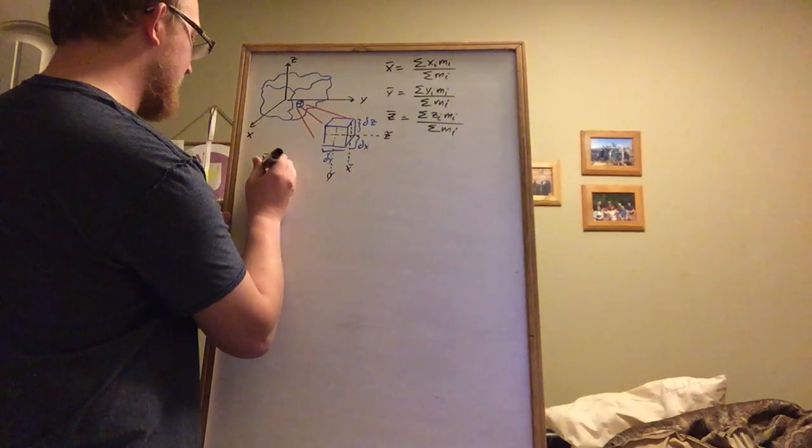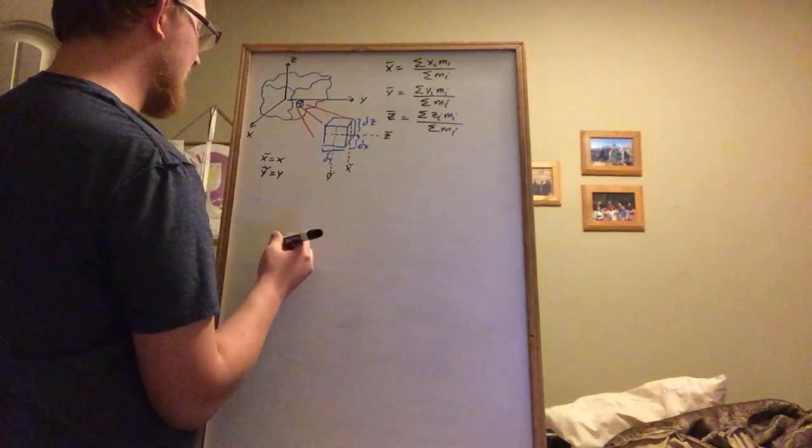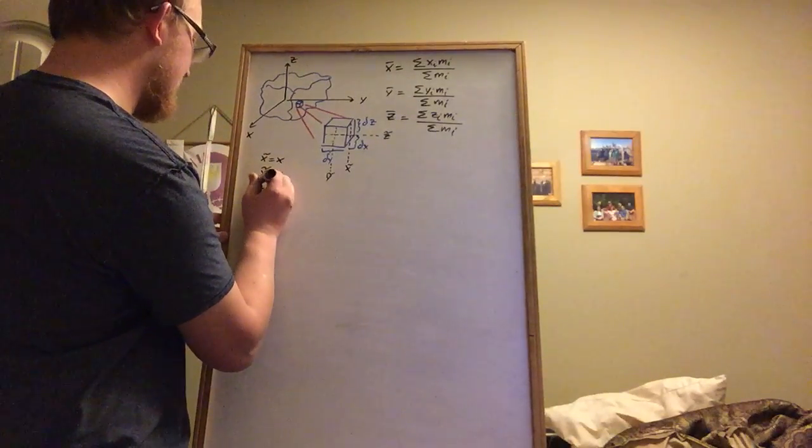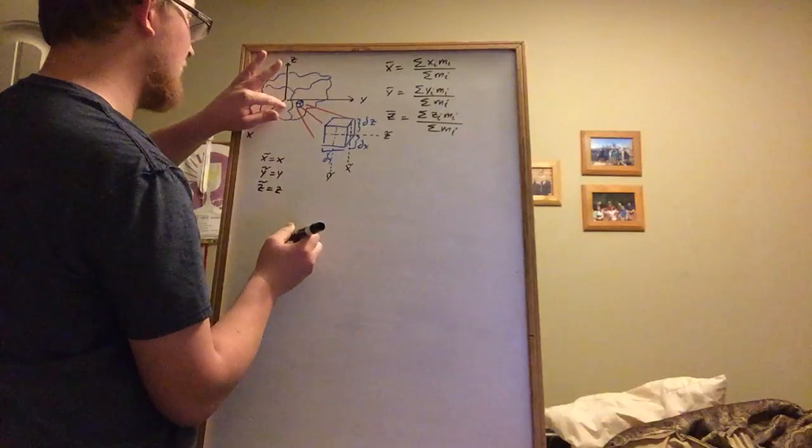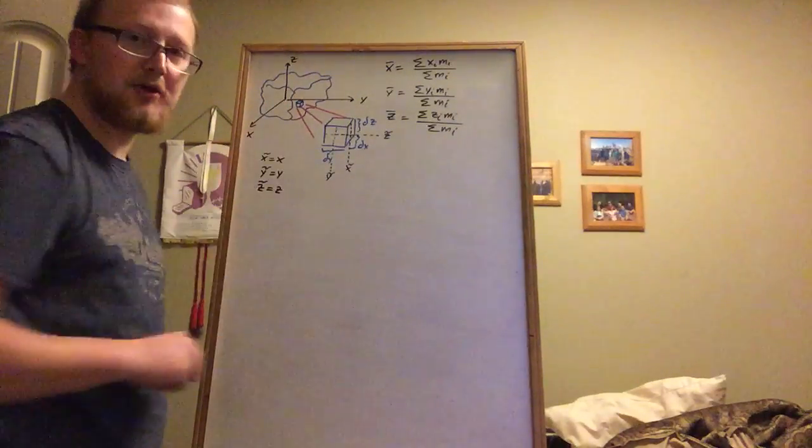So in that case, we could go ahead and say that x tilde is just x, which would be the measure of this cube from the x equals zero line, and then we could say that y tilde is just y.